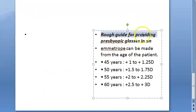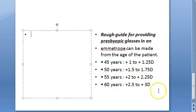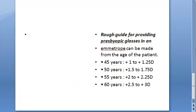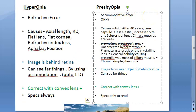Here is a rough guide for prescribing presbyopic glasses: around 45 years — plus 1 diopter; 50 years — plus 1.5; 55 years — plus 2; 60 years — plus 2.5. So the power increases with age. The most important thing to understand is that only near vision is affected in presbyopia.